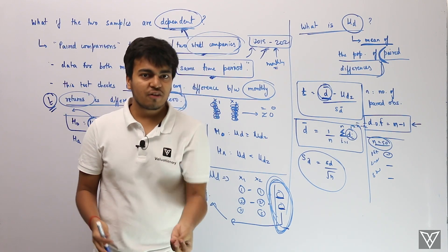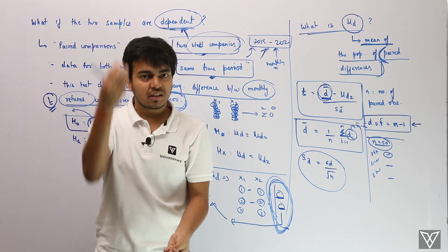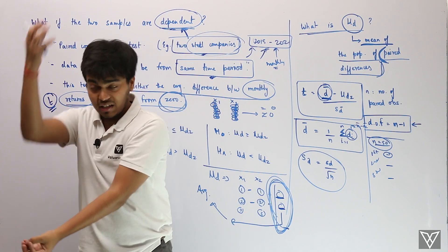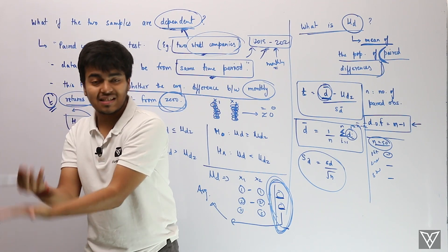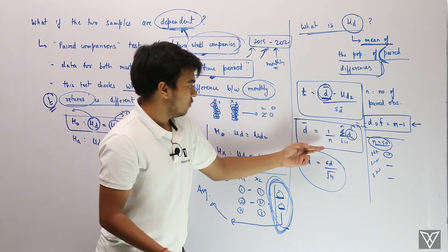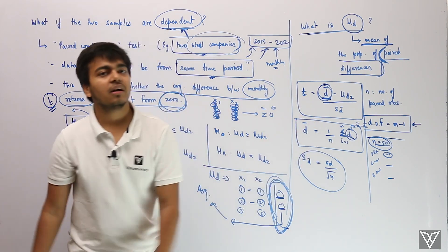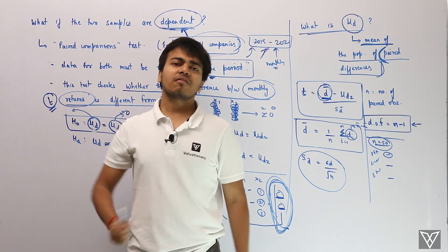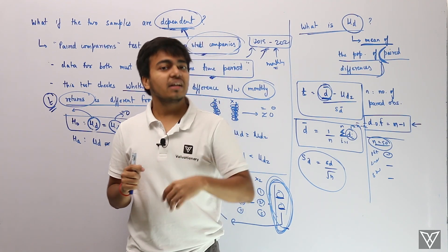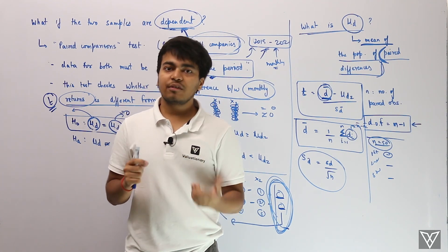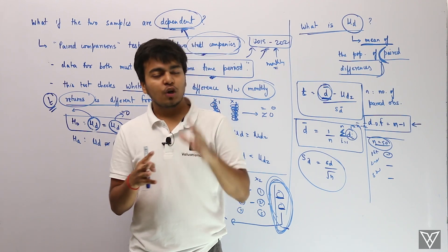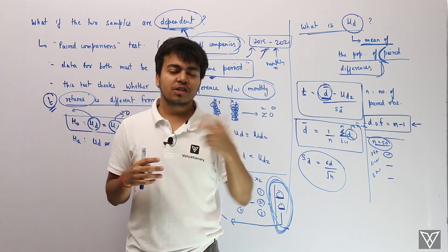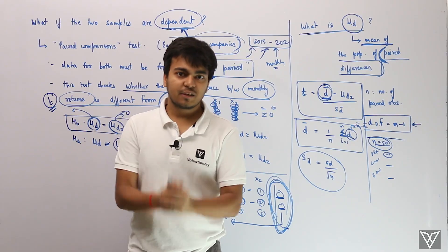To summarize: you have two series, you take their average values, compute the difference for each time period, get a set of differences, and the average of those differences is your d-bar. In the next video, we'll be understanding this with an example, so make sure you watch these two videos simultaneously. Thank you.